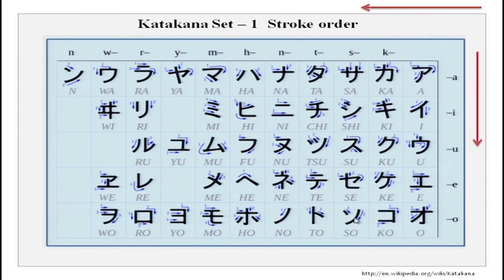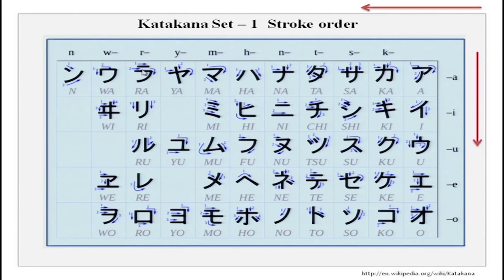Continuing with katakana: na, ni, nu, ne, no; ha, hi, fu, he, ho; ma, mi, mu, me, mo; ya, yu, yo. Note that 'yi' and 'ye' are missing in both hiragana and katakana because they are very similar to existing sounds and have been left out. Then: ra, ri, ru, re, ro; wa, o, and n.